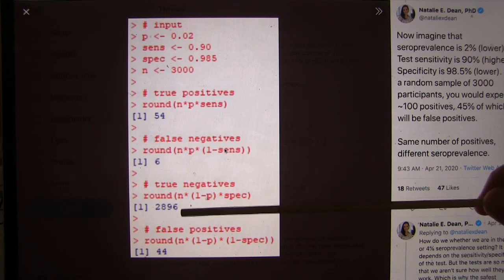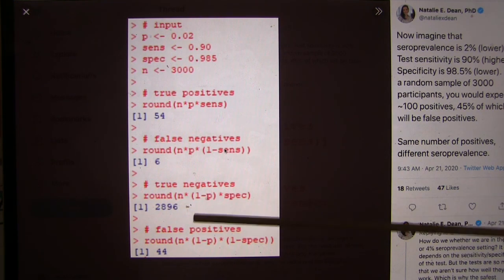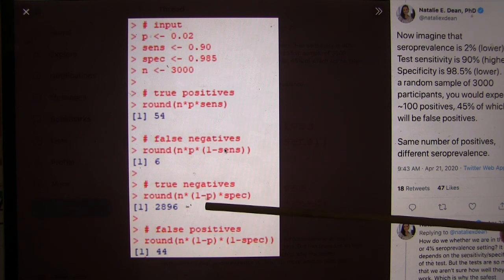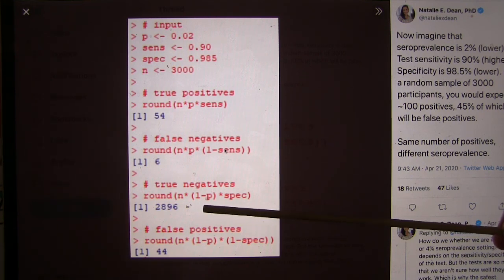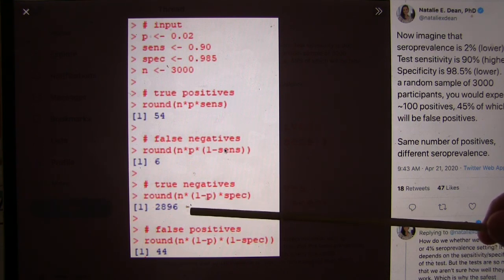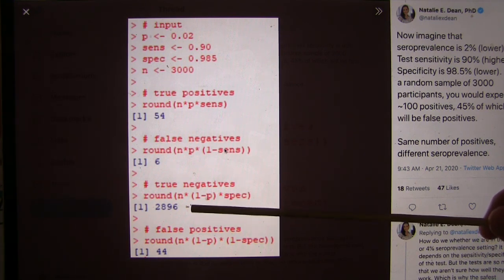Our true negatives, so the people who don't have it, who we find not having it, 3,000 times 98%. Let's see. It's only... Times 98.5. Okay, so that's... Yeah, basically the 98% of the population, and then times 0.985. That's right.